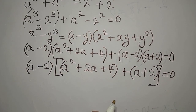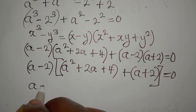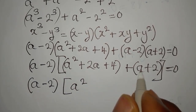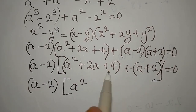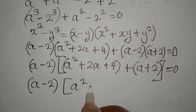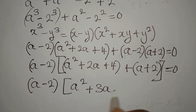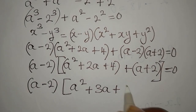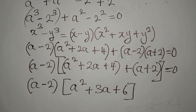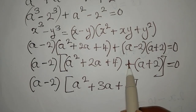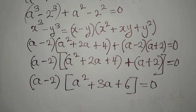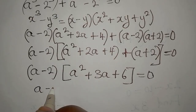We now add the terms inside: a² stays as a², then 2a + a gives 3a, and 4 + 2 gives 6. Note this is addition, not multiplication — we have an addition operation between the two bracket expressions. So we get (a - 2)(a² + 3a + 6) = 0.